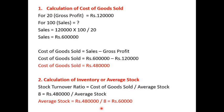First, calculation of cost of goods sold. Gross profit is 20% on sales, and the amount is 1,20,000. For 20% gross profit the amount is 1,20,000, so sales equals 1,20,000 × 100 ÷ 20 = Rs. 6,00,000. Then, cost of goods sold = sales minus gross profit = 6,00,000 minus 1,20,000 = Rs. 4,80,000.